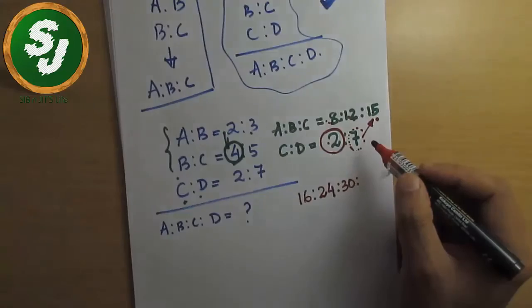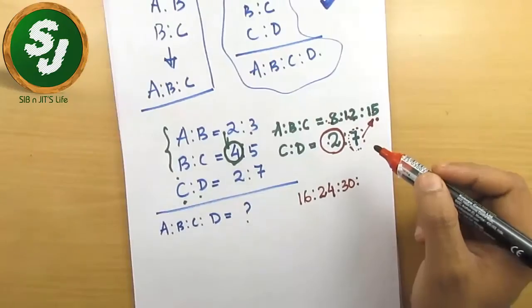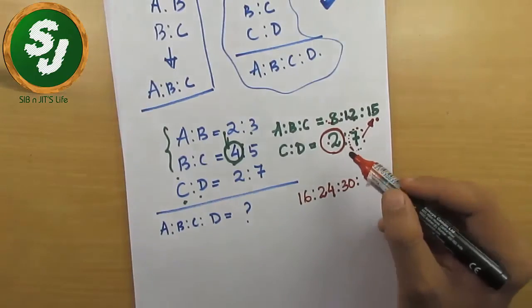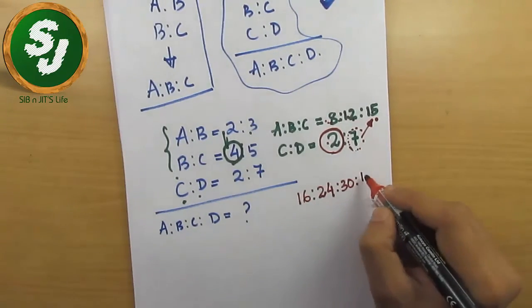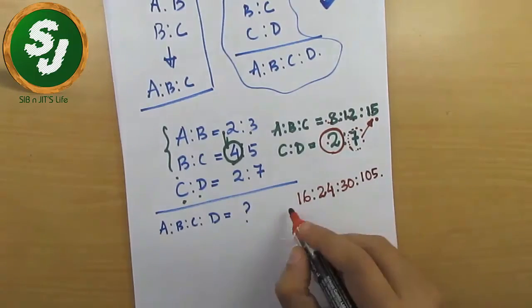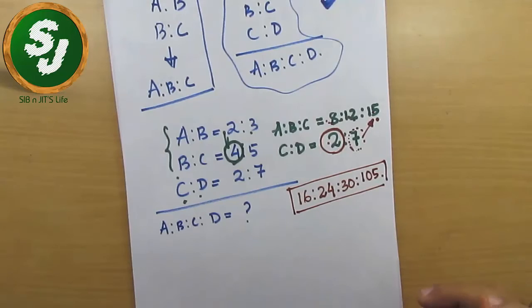Let's take this 7 and multiply with 15 exactly in the same way what we were doing with A to B and B is to C. So pick this 7 and multiply with 15, it becomes 105. So 16 is to 24 is to 30 is to 105 is the value of A to B to C to D.